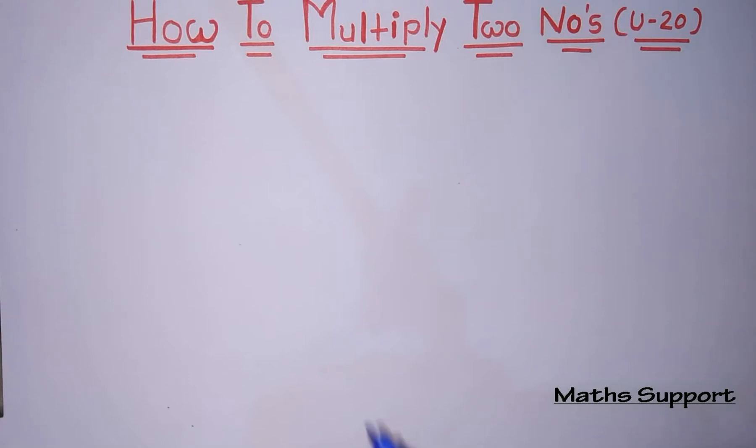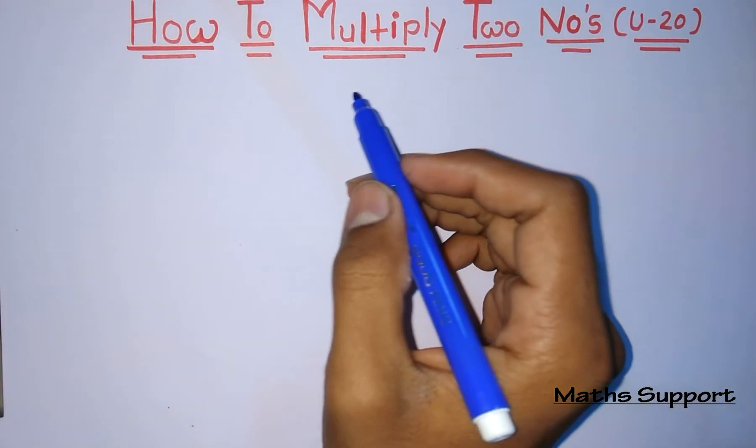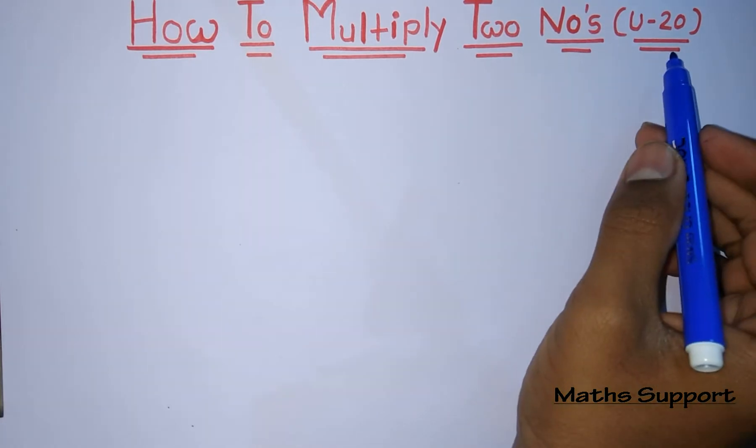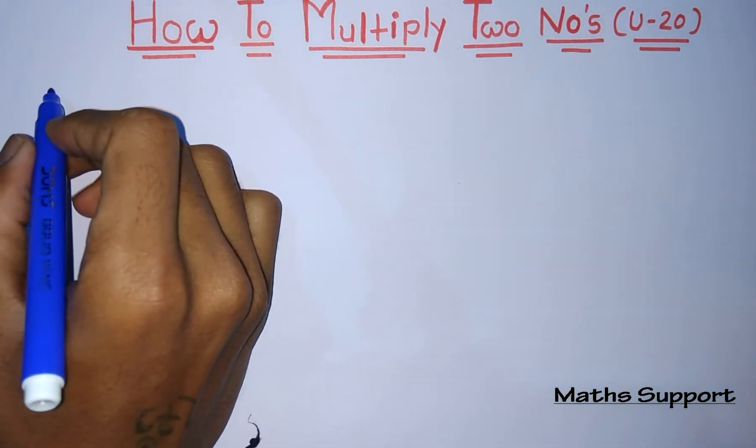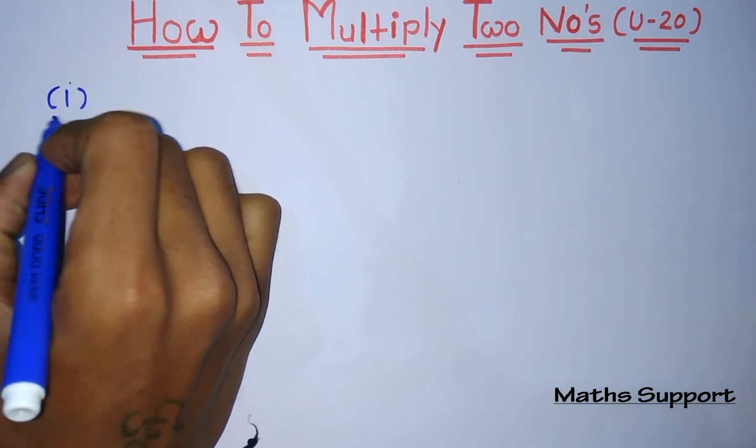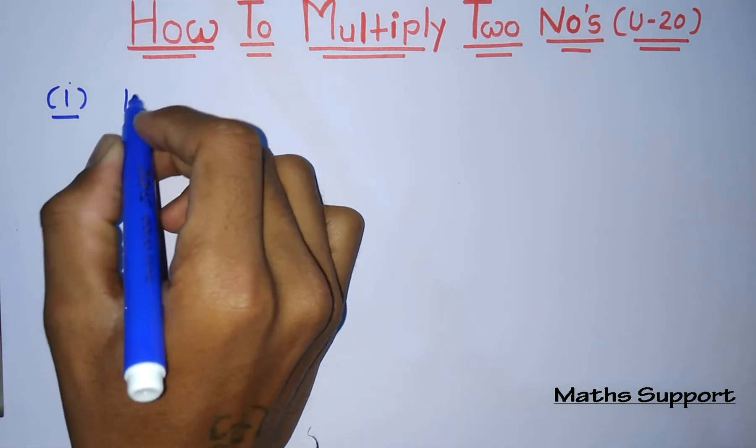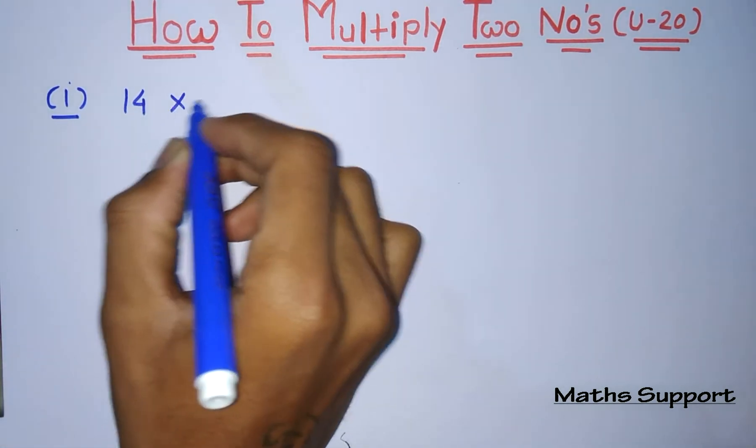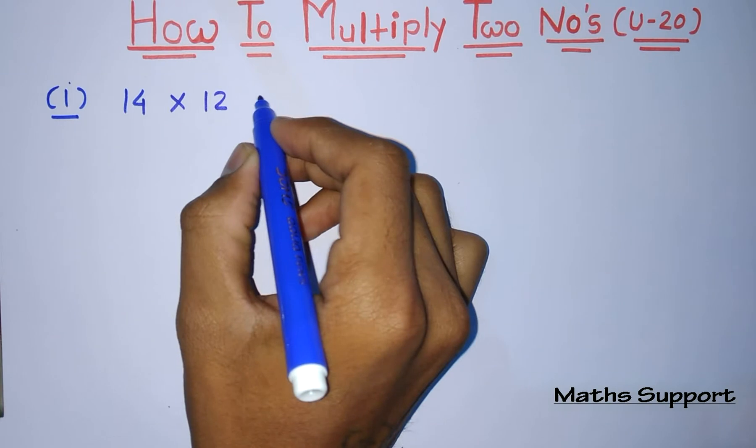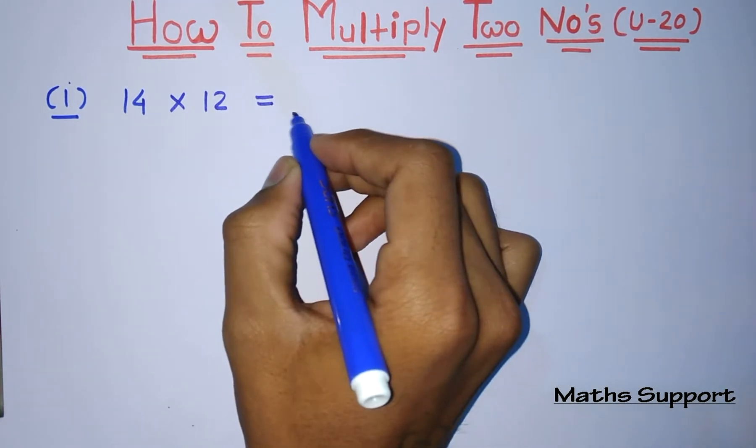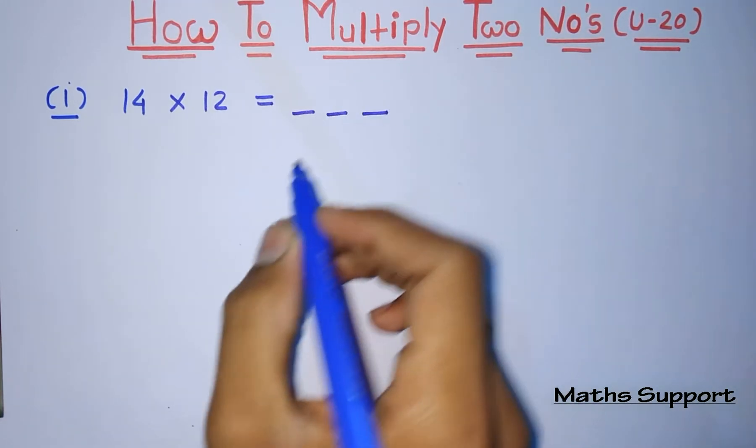Hello guys, welcome to Math Support. Today we'll discuss how to multiply two numbers under 20. Let's start with one example. You are supposed to multiply two numbers, let's say 14 and 12. Whatever answer you will get over here, that is of three digits.